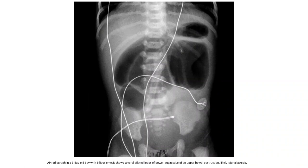AP radiographs in a one-day-old boy with bilious emesis show several dilated loops of bowel suggestive of a distal obstruction, like jejunoileal atresia.